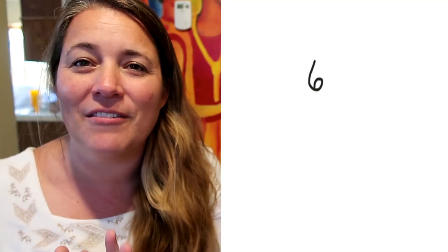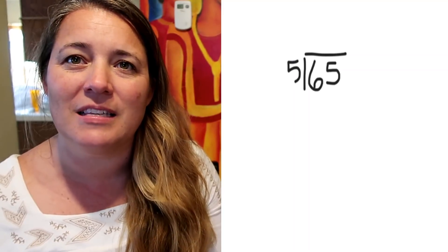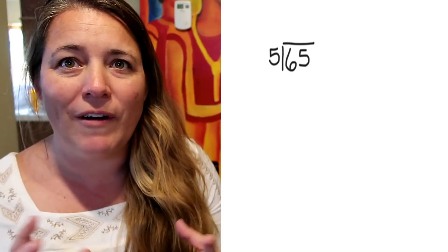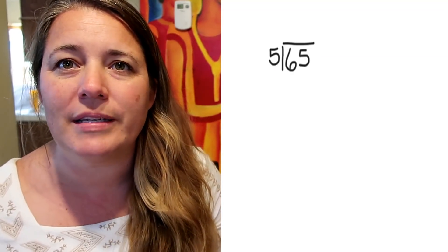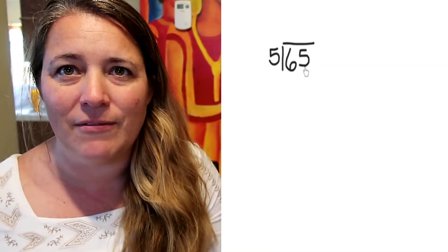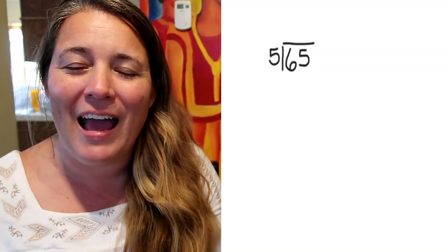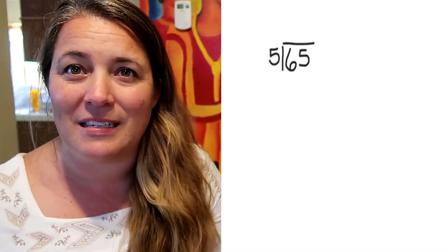We're going to start a little bit easier: 65 divided by 5. The first thing we have to identify is the size of our group — that's called a divisor. If you said the 5, you're right. We're trying to figure out how many of those 5s can fit into 65.